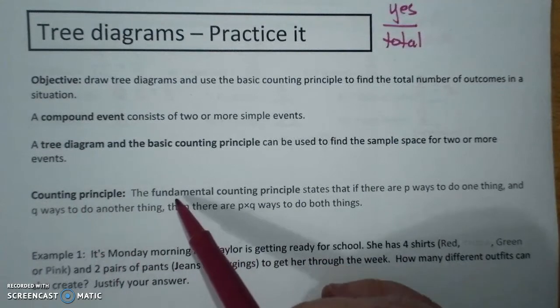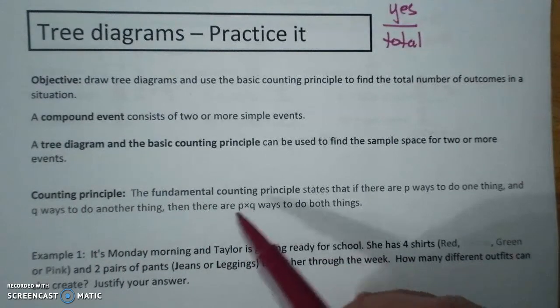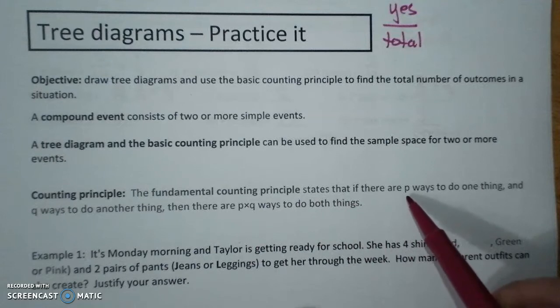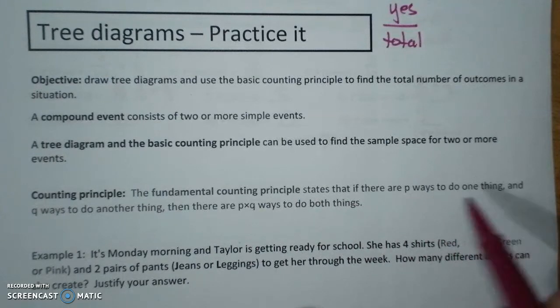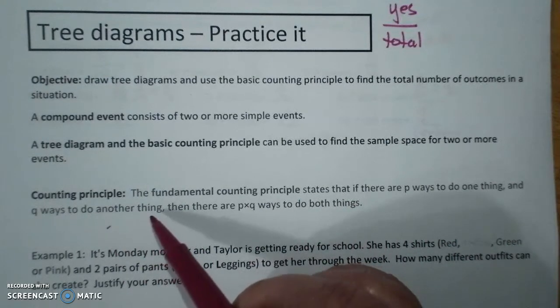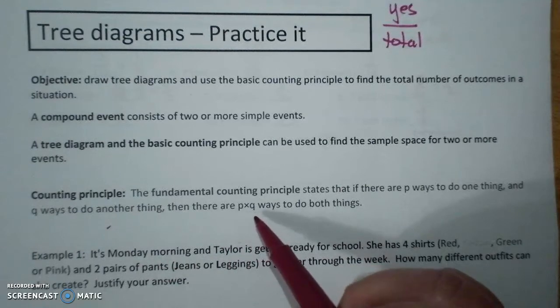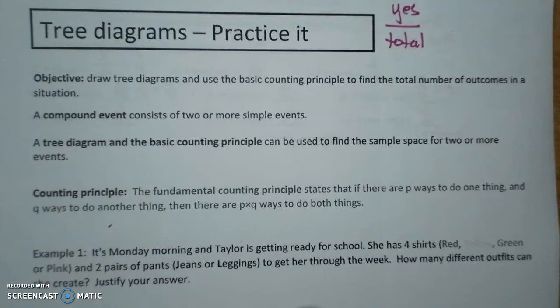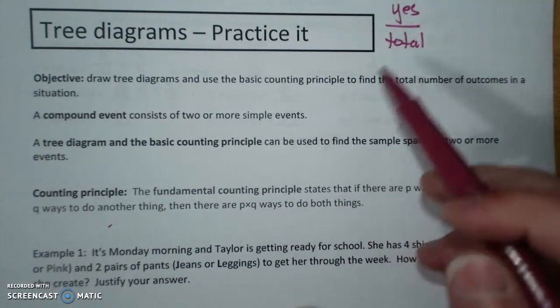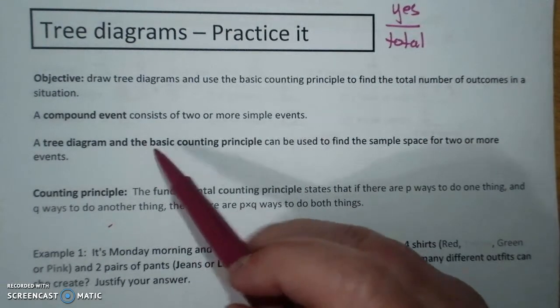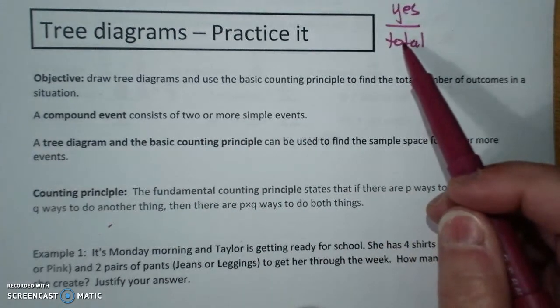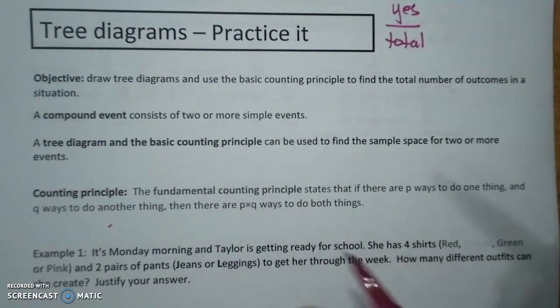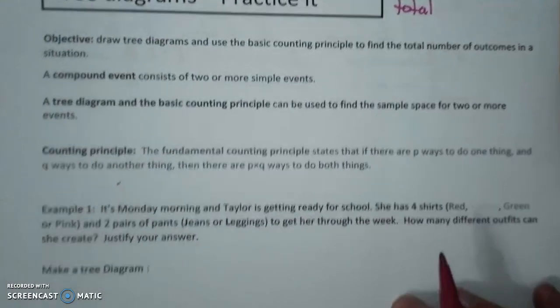Counting principle, you'll hear it called the fundamental counting principle, states that if there are p ways to do one thing and q ways to do another thing, then there are p times q ways to do both things. So in this lesson, I'm going to ask you to find the total by creating a tree diagram and by using the fundamental counting principle.